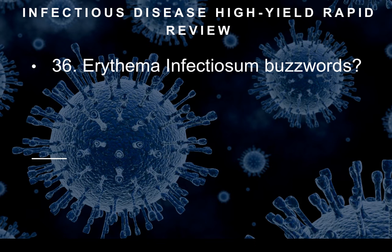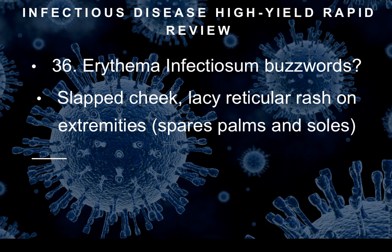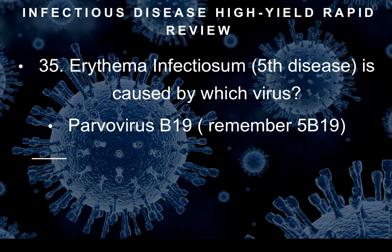Question thirty-six: What are the buzzwords for erythema infectiosum? This will be that slapped cheek appearance — a lacy, reticular rash on the extremities that spares the palms and soles. If the patient looks like they got a slapped cheek rash with a lacy reticular rash on the extremities, you know this is fifth disease, parvovirus B19.